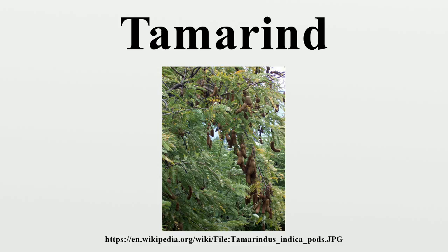The leaflets are bright green, elliptical ovular, pinnately veined, and less than 5 cm in length. The branch droops from a single central trunk as the tree matures and is often pruned in agriculture to optimize tree density and ease of fruit harvest. At night, the leaflets close up. The tamarind does flower, though inconspicuously, with red and yellow elongated flowers.